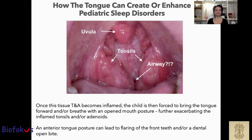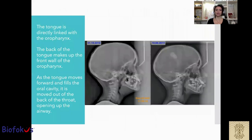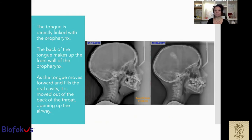An anterior tongue posture can lead to fluttering of the front teeth and dental open bite. The tongue is directly linked with the oropharynx — the back of the tongue makes up the front wall of the oropharynx. As the tongue moves forward and fills the oral cavity, it is moved out of the back of the throat, opening up the airway. In less than one year in this girl's case, we enlarged — almost doubled — the airway size so the tongue can move forward. You can notice the correction of the hyoid bone, the decrease in tonsil and adenoid size, and a change in the direction of facial growth to an anterior and forward growing face, not vertical.